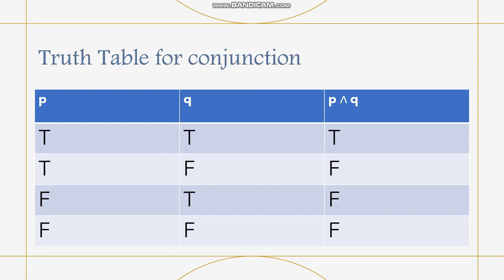Next is the table for conjunction. Conjunction, as we said, is called 'and', so P and Q. When P is true and Q is true, the truth value is true. When P is true and Q is false, the result for P∧Q is false. When false and true, it is false. When false and false, the truth table result for conjunction is also false.